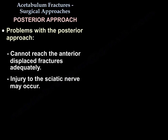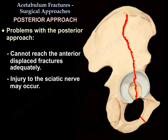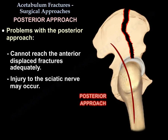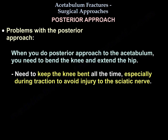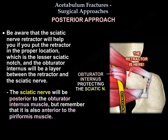The problems with the posterior approaches are the following: you cannot reach the anterior displaced fractures adequately, and you may get injury to the sciatic nerve. When you do a posterior approach to the acetabulum, you need to bend the knee and extend the hip. Keep the knee bent all the time, especially during traction. Be aware that the sciatic nerve retractor will help if you put the retractor in the proper location, which is the lesser sciatic notch, and the obturator internus will be a layer between the retractor and the sciatic nerve. The sciatic nerve will be posterior to the obturator internus, but remember it is also anterior to the piriformis.